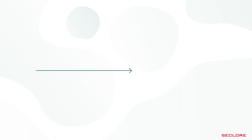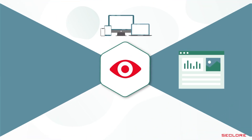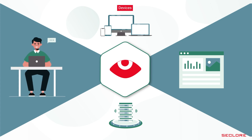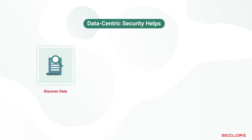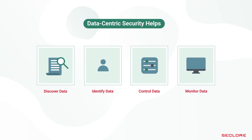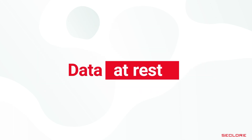What is data-centric security? Data-centric security is the ability to take a data-centric view of security to make it independent of device, application, network, or the person. Data-centric security involves discovering where the data is, identifying what the data is, controlling what can be done with the data, and monitoring what happened to the data — all while the data is at rest, in transit, or in use.